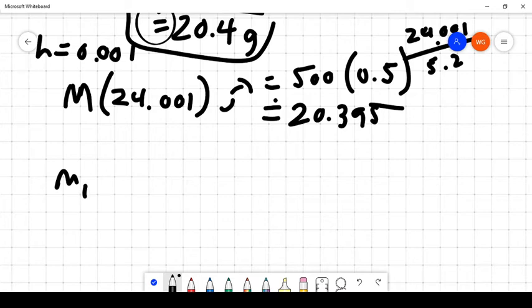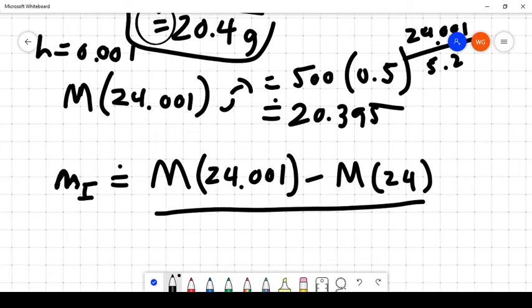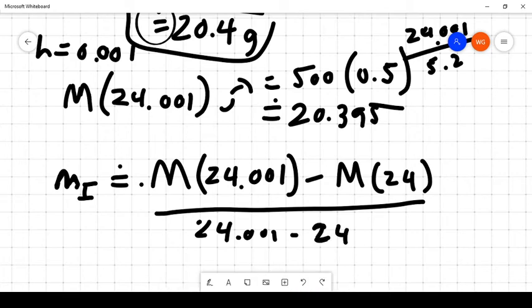Our m instantaneous rate of change at the time of 24 hours is going to be equal to—now m here stands for slope, but M here, capital M, stands for the output value. So it's going to be M(24.001) minus M(24), all over 24.001 minus 24. Well, what does that bring us to?